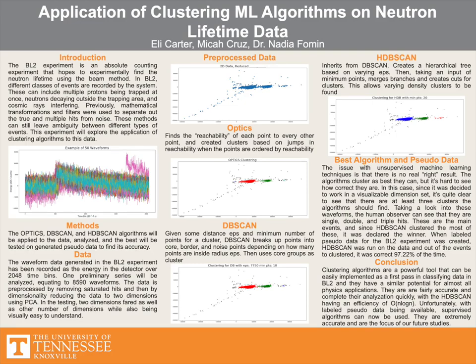The BL2 experiment tries to determine the lifetime of a neutron by observing a neutron stream and counting the number of times the neutrons decay into protons. The decayed protons are trapped and sent at a detector, which records the hits as a waveform. Counting the number of waveforms would ideally be enough, but there can be outside interference, and also sometimes multiple hits at once that can confuse the detector.